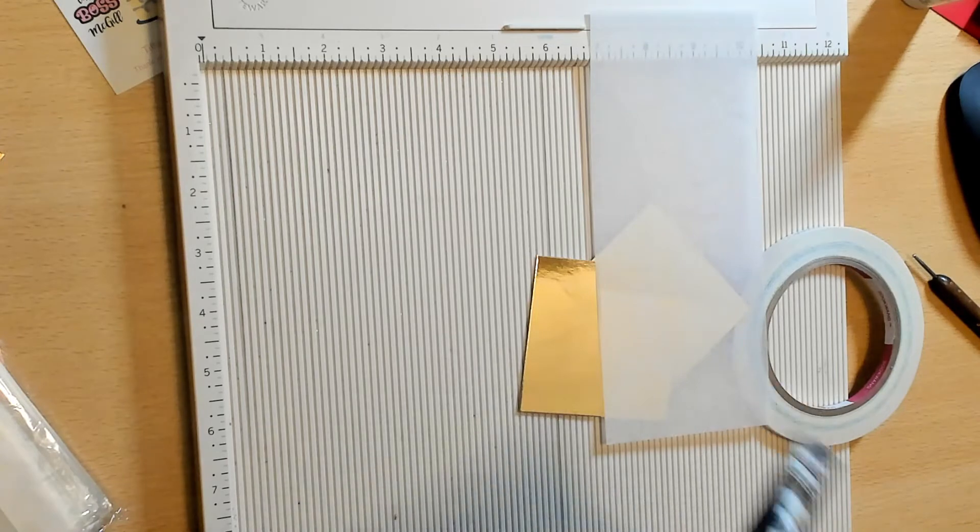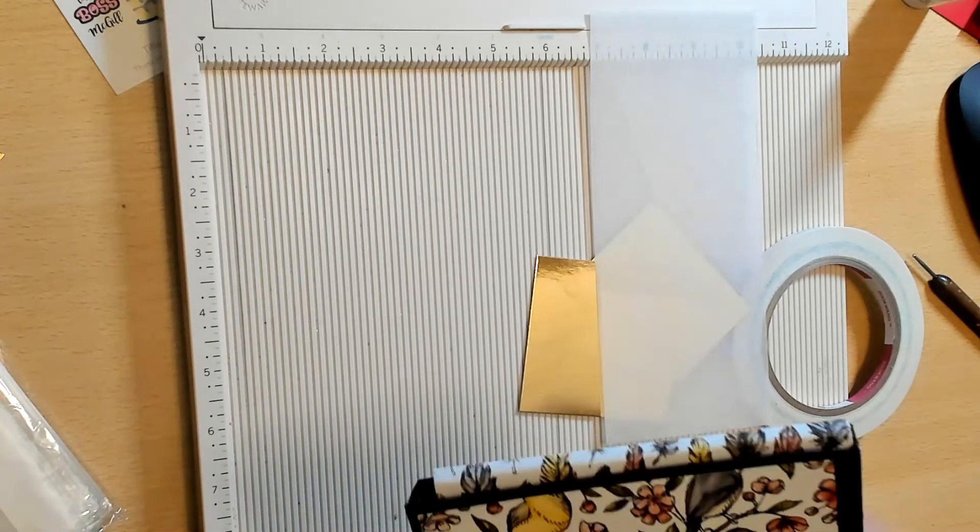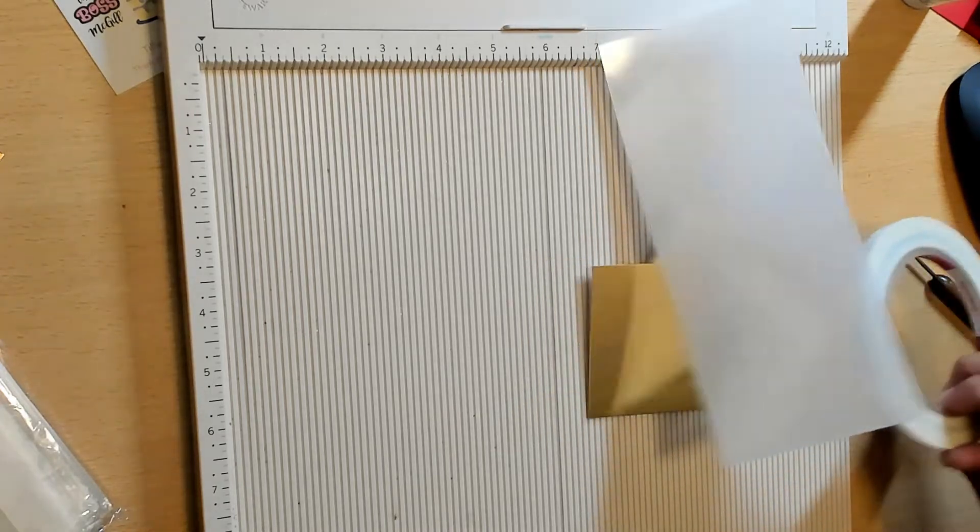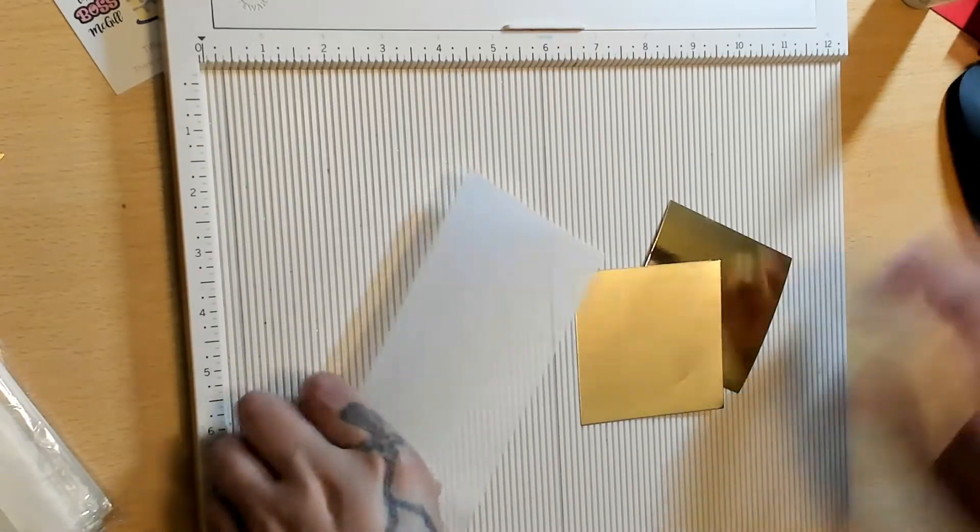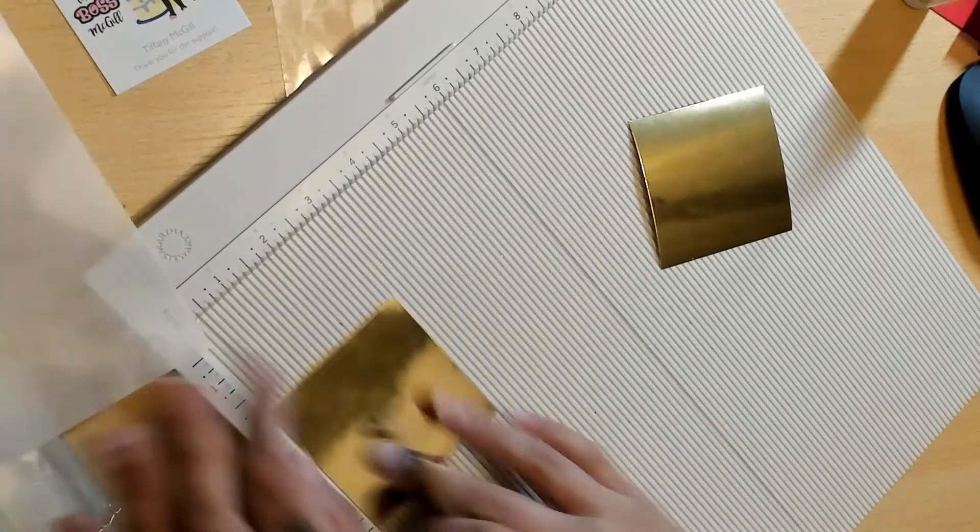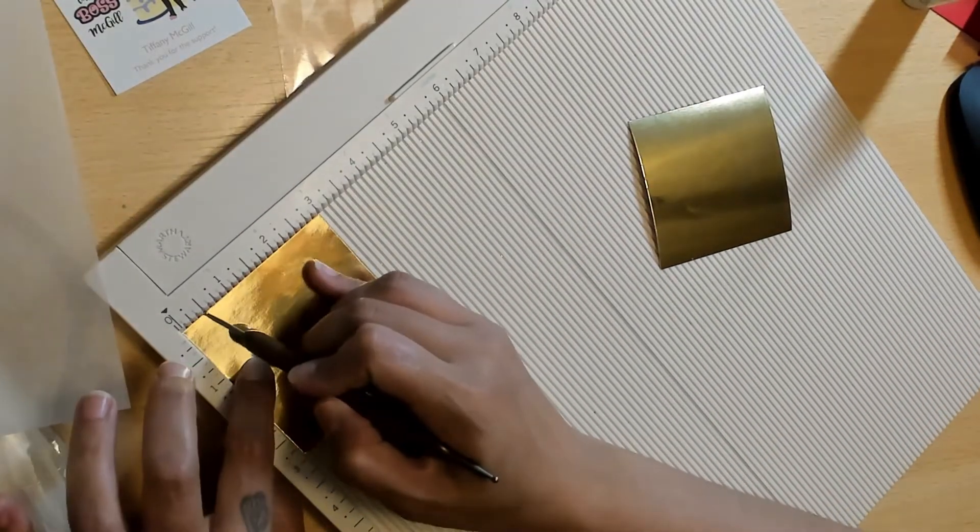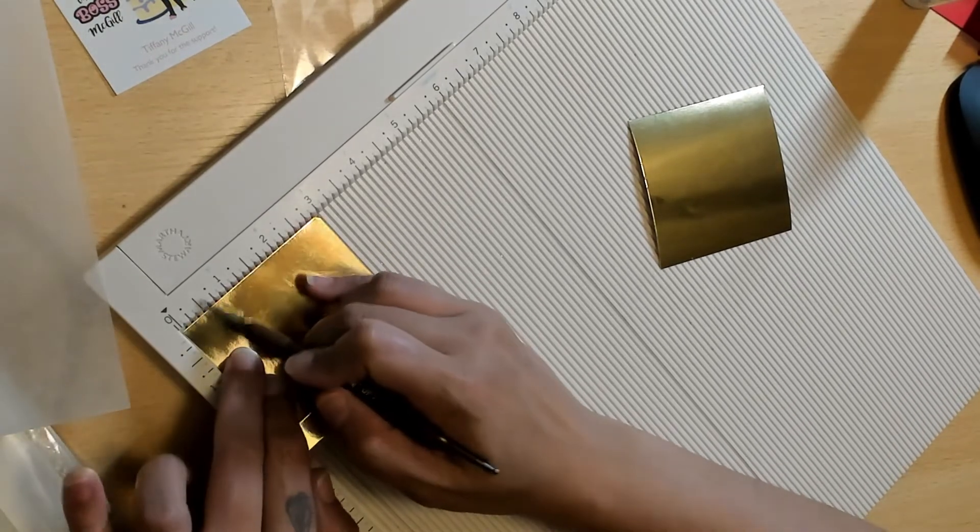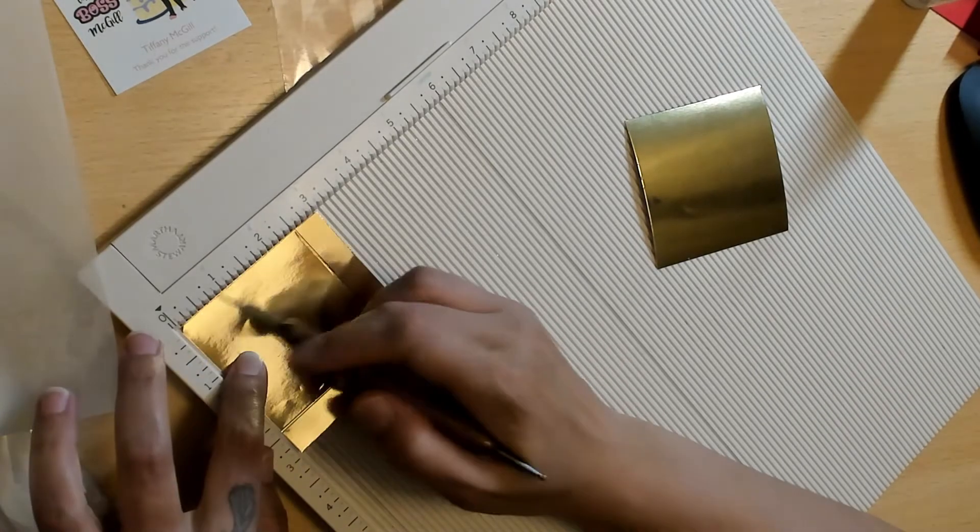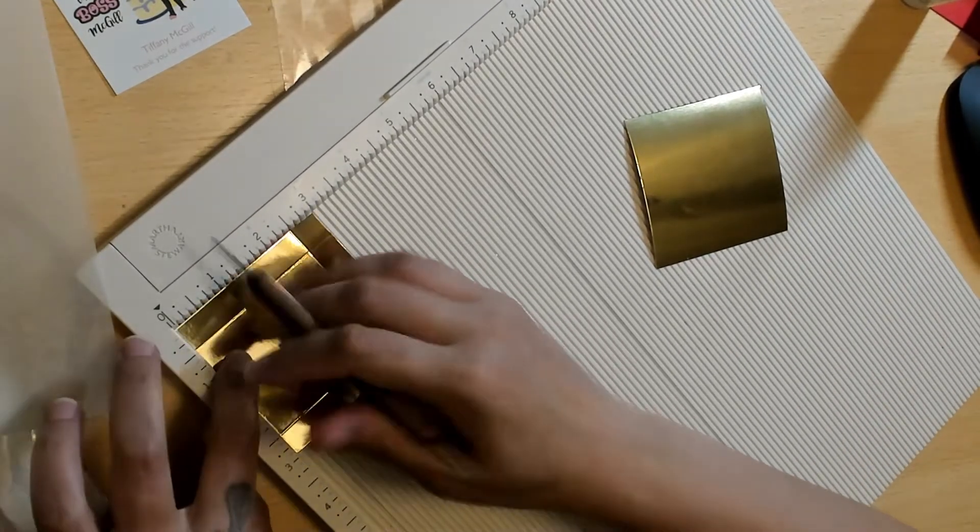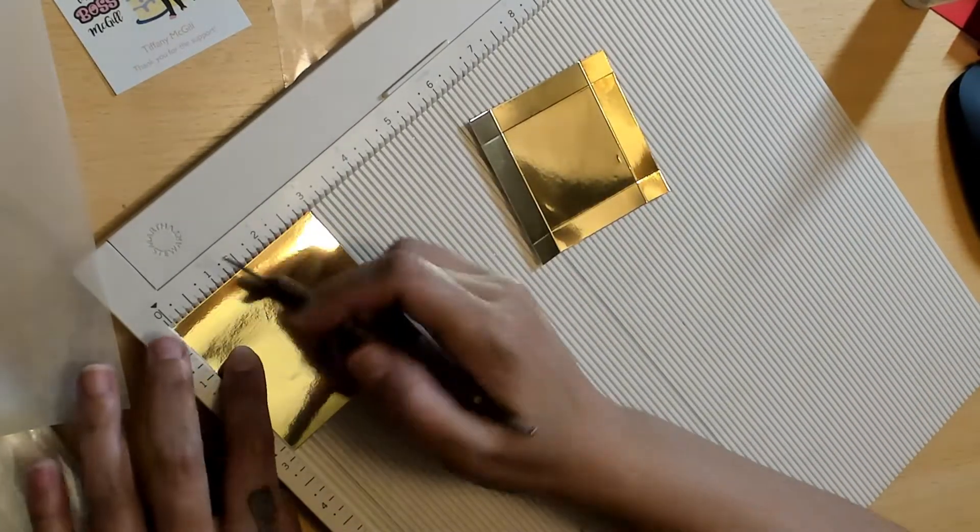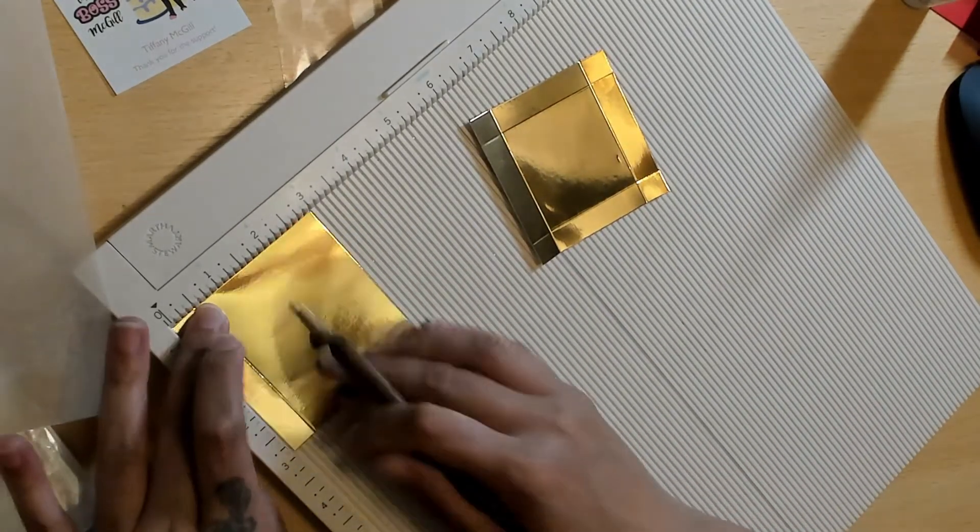All right, so we're going to go ahead and score the three by three pieces first. And for both of them you're just going to score at a half an inch on all four sides. So half an inch, rotate, half an inch, rotate, half an inch, rotate. Do that to both pieces.